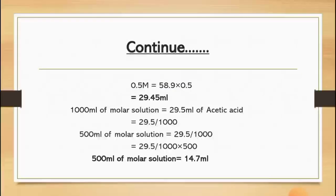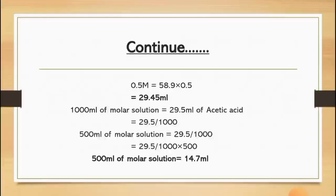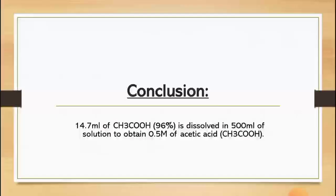The next point is 1000 ml of molar solution is equal to 29.5 ml of acetic acid. We know from the statement that we have to calculate the 500 ml of the molar solution. We will multiply it by 500, that results in 14.7 ml of the molar solution for 500 ml of the acetic acid.